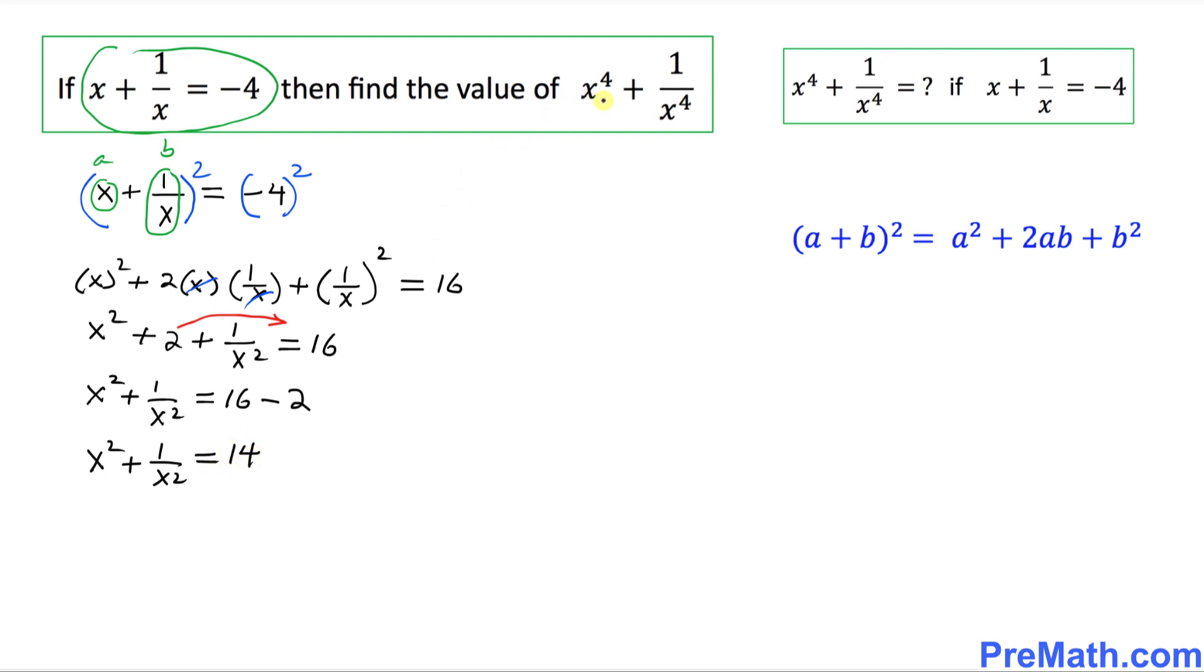Now since we are looking for x power 4, that means we're going to square this quantity once again. Let's square both sides as well. And we're going to be using this well-known formula once again. Once again, let's call x square as a and 1 over x square as b. Then we are going to be using this formula.